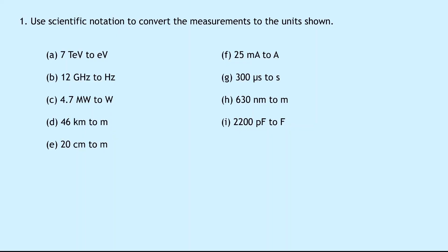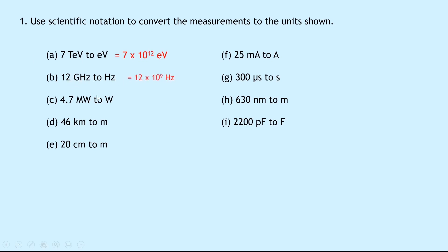As we try these questions it's probably going to be helpful for you to have the table of prefixes open at the same time. So in question 1 it says use scientific notation to convert the measurements to the units shown. In part A we need to convert 7 tera electron volts to electron volts. The prefix tera is times 10 to the power of 12, so we replace the capital T with times 10 to the 12, which gives us 7 times 10 to the power of 12 electron volts. Part B: 12 gigahertz to hertz. Giga is times 10 to the 9, so we get 12 times 10 to the 9 hertz.